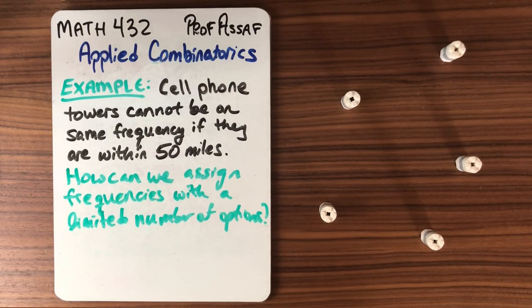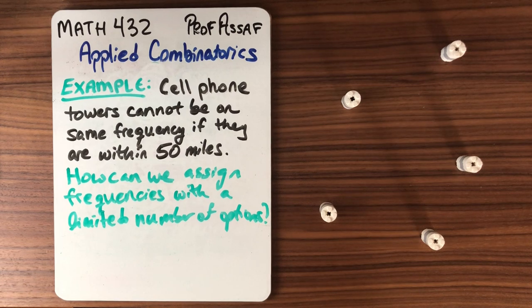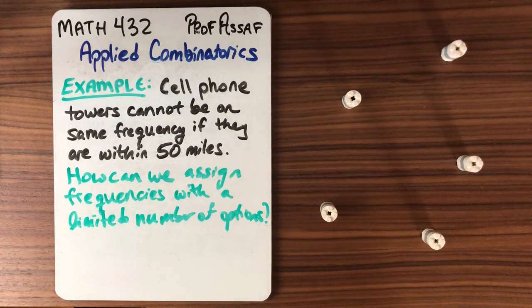This is Math 432 Applied Combinatorics. I'm Professor Asaph and for this series we're going to be beginning with a motivational problem. Consider an array of cell phone towers.